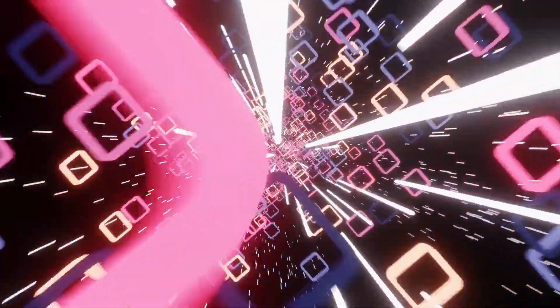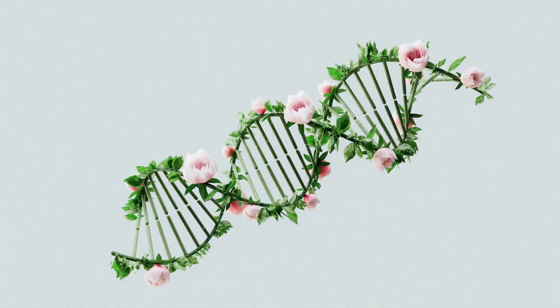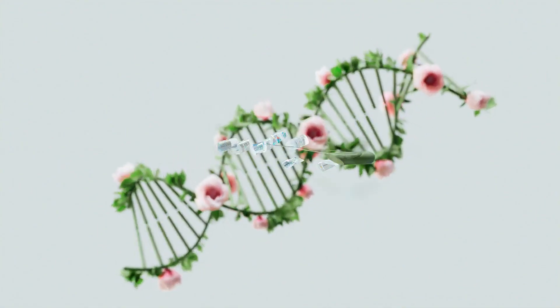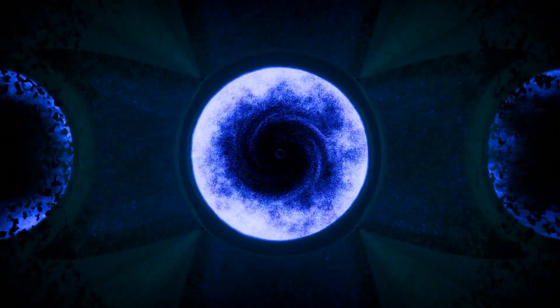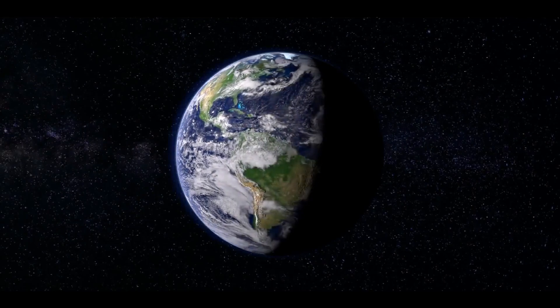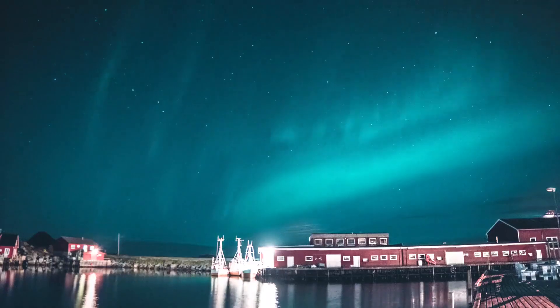Some theorists argue that when CERN smashes particles together, it's not just creating new particles, it's destabilizing the very fabric of space-time. Think of our universe as a web. Every collision at the LHC might send ripples through that web, creating tiny tears that alter our reality. And if we're living in a simulation, CERN could be tampering with the very code that runs it.